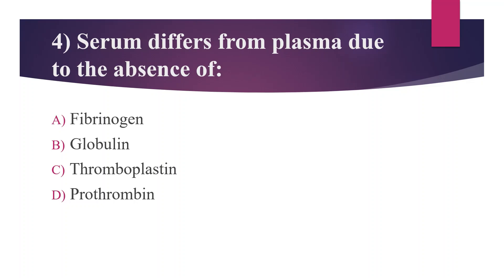Serum and plasma both come from the liquid portion of the blood. Plasma is a clear, yellowish fluid part of the blood that contains blood clotting agents. Serum is the liquid part of blood after coagulation and without the clotting factors.